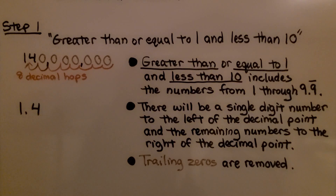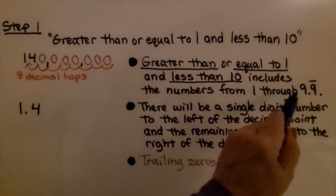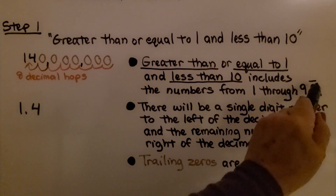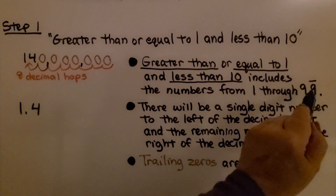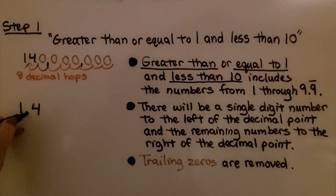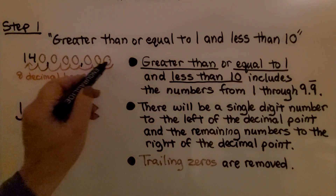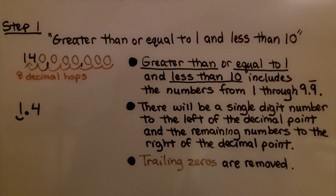When we say greater than or equal to 1 and less than 10, it includes numbers from 1 through 9.999... repeating — as long as it's less than 10, it could be 9.99999. There will be a single digit number to the left of the decimal point, and the remaining numbers to the right. In this case, there's a 4, and all the trailing zeros are removed. We have 1.4.